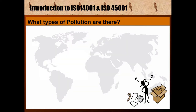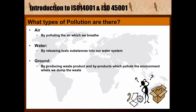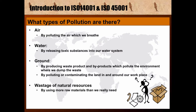What types of pollution are there? The most common is air pollution. Water pollution, by releasing toxic substances into our water system. Ground pollution, by producing waste products and by-products which pollute the environment where we dump the waste, and by polluting or contaminating the land in and around our workplace. Wastage of natural resources, by using more raw materials than we really need, by wasting natural resources for example water, and by wasting electricity.